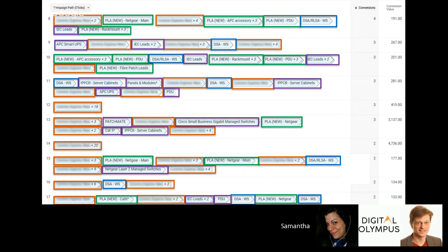The reason attribution matters in PPC is that a standard AdWords report attributes the conversion to the last ad or campaign clicked. So if you look at your brand campaign and say 'it's not working, I'll switch it off,' you may not realize it assisted earlier in the journey. If you switch off something that was assisting conversions, it can really impact sales at the end of the conversion funnel.